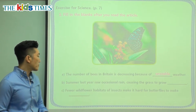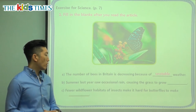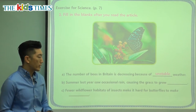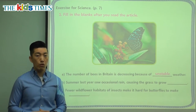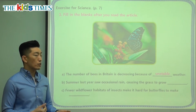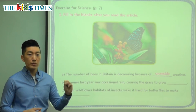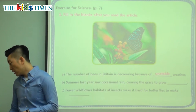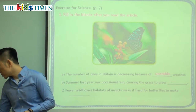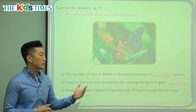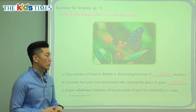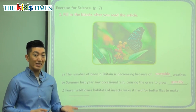Question B says: summer last year saw occasional rain causing the grass to grow. How did the grass grow? So when the rain comes down, a lot at once occasionally, it happens to make the grass grow quickly.